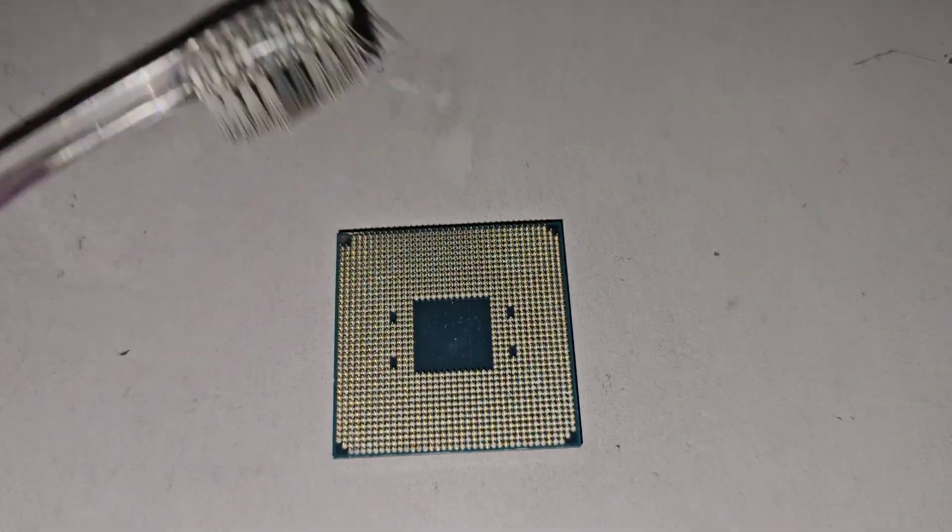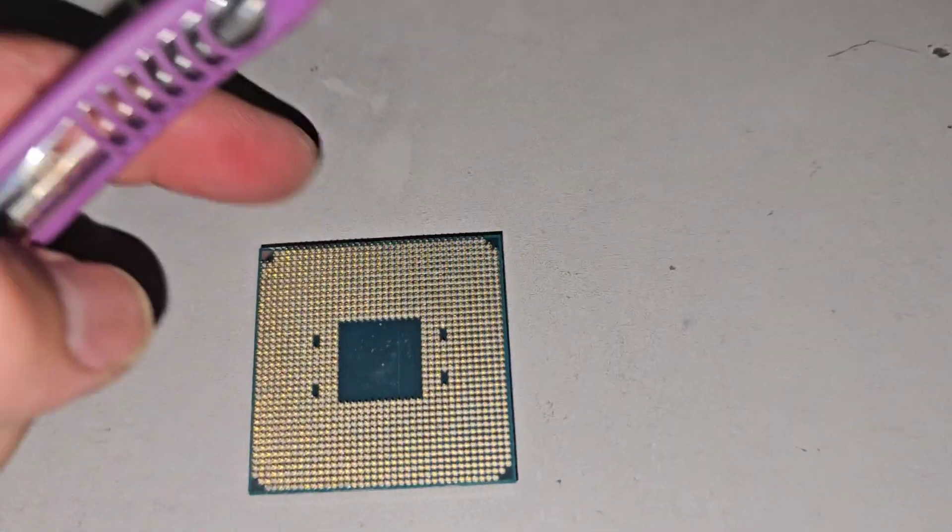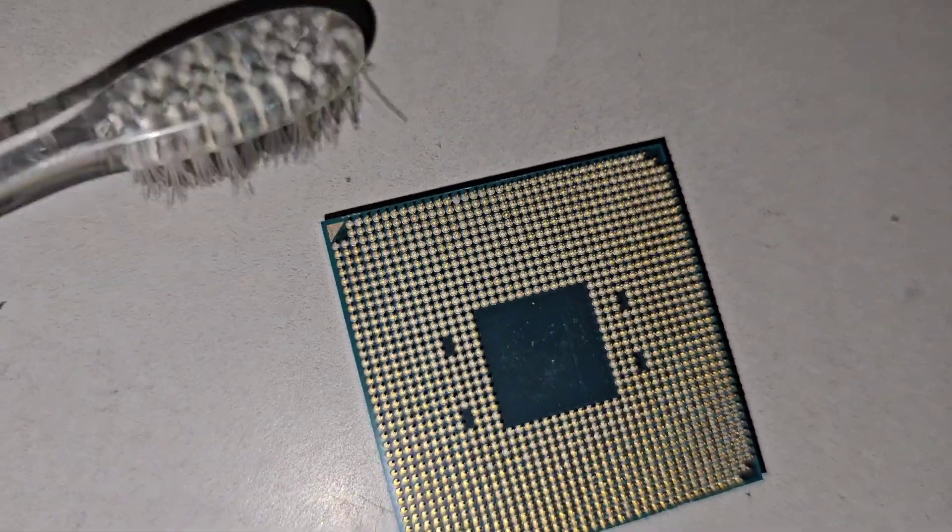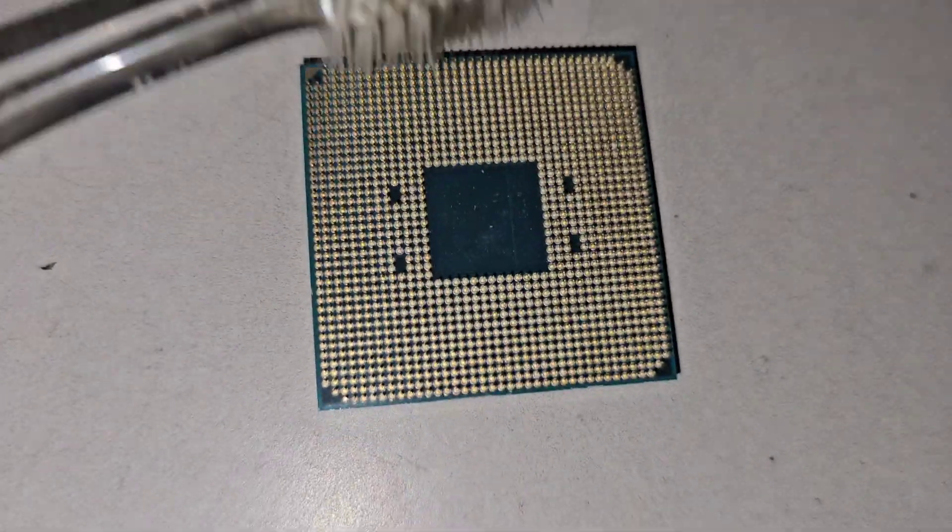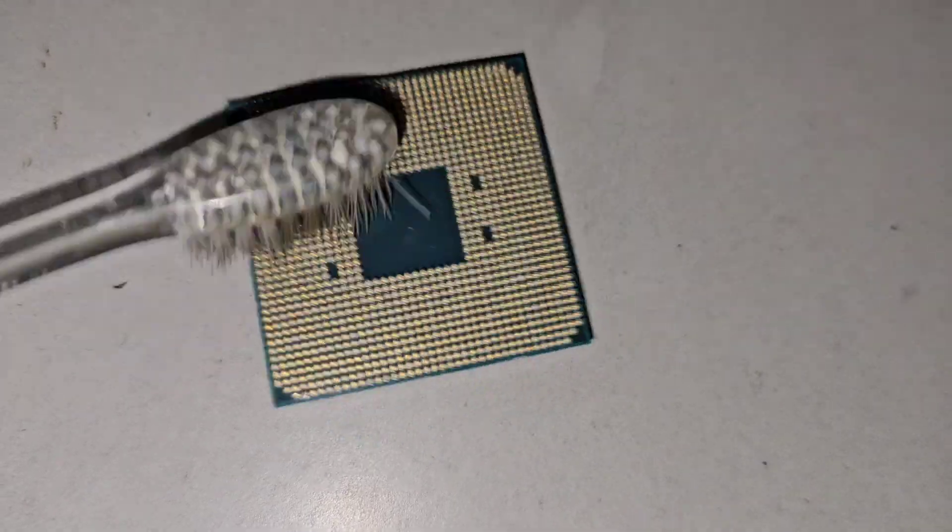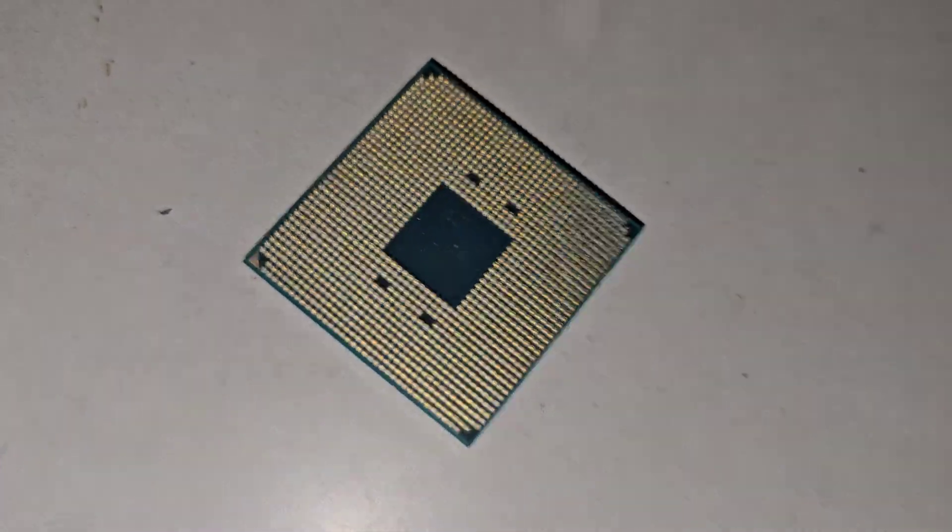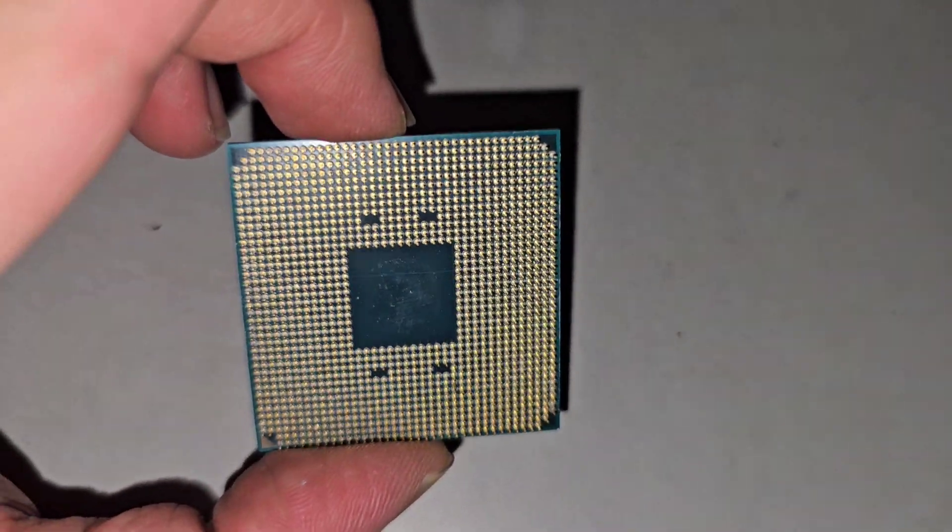Oh, one thing I forgot to mention. If there's the thermal paste there, you can brush it off with a toothbrush. Okay, you can see, you can brush it off. It's not going to damage the pins, just don't be too rough with it. But you can see I can get in between all the pins and brush that off. All right, that's it. Thanks for watching again, and I'll see you on the next one. Bye.